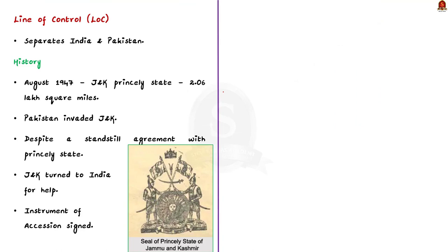Firstly, take the Line of Control — it separates India and Pakistan. Let us know about the history behind it. In August 1947, Jammu and Kashmir was a princely state of the size of 2.06 lakh square miles. But two months later, Pakistan invaded Jammu and Kashmir, despite having signed a standstill agreement with the princely state.